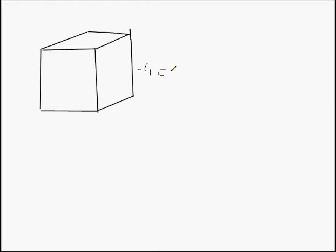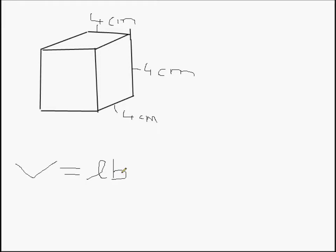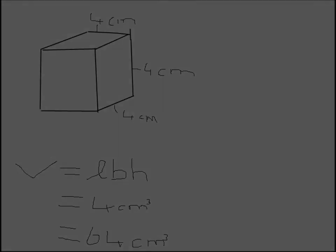Here is an example of working out the volume of an object. This is a cube, so all sides are 4 centimeters. We write V equals — V stands for volume — length times breadth times height equals 4 centimeters cubed, which equals 64 centimeters cubed.